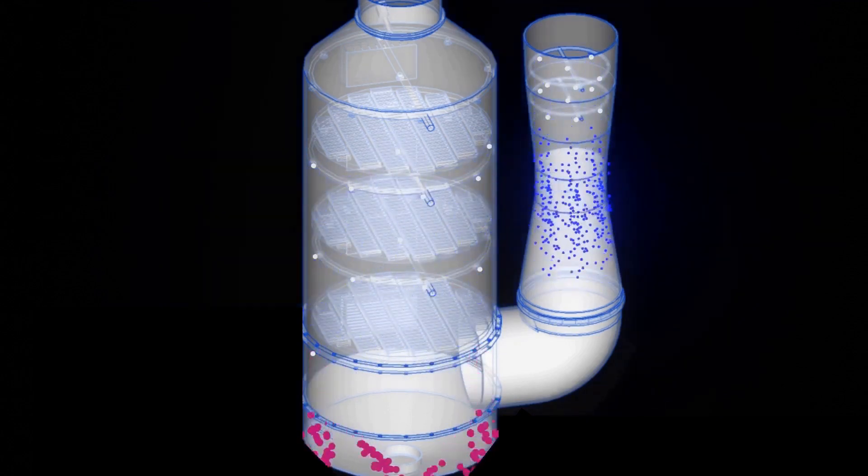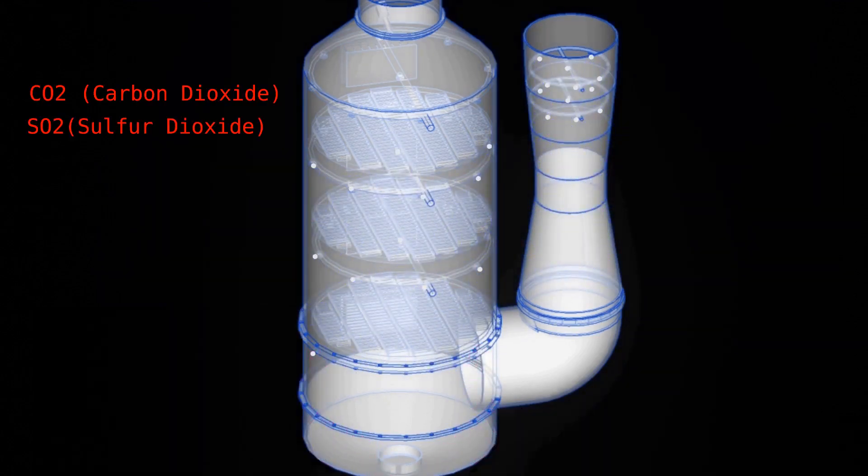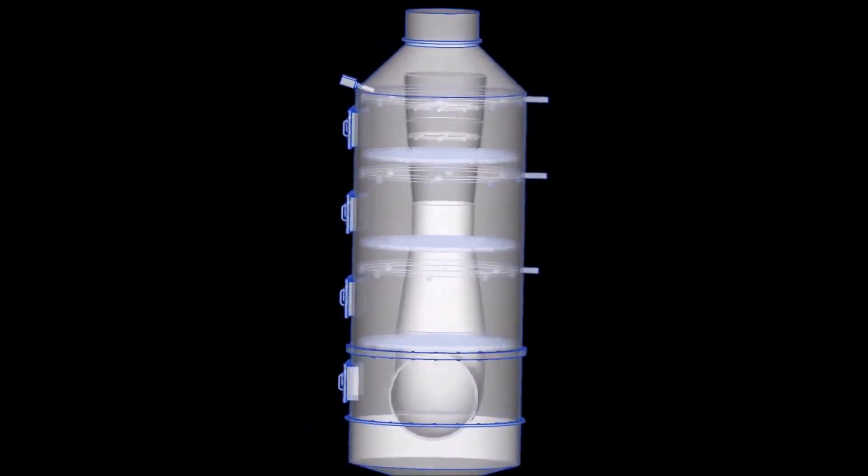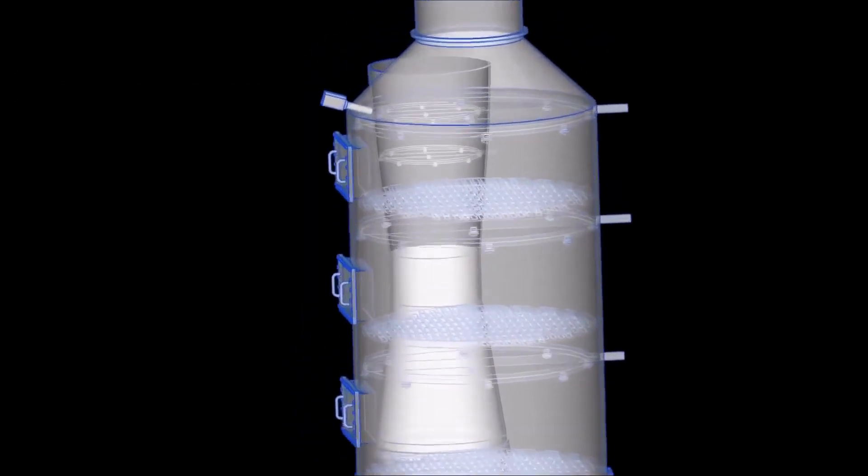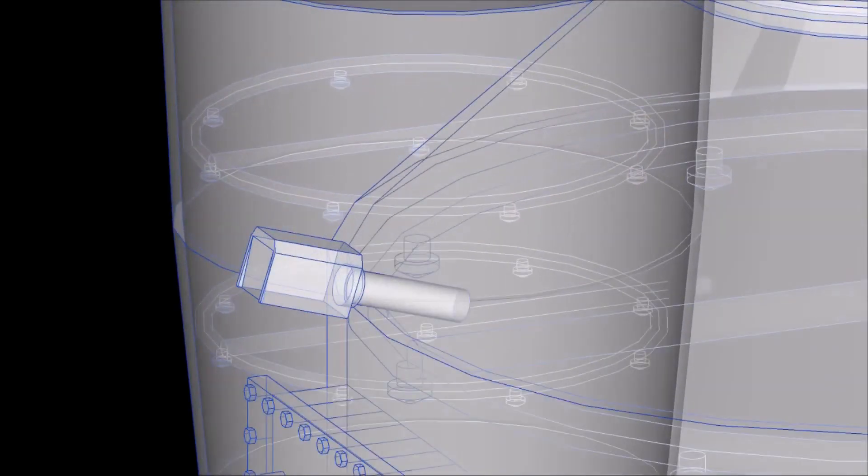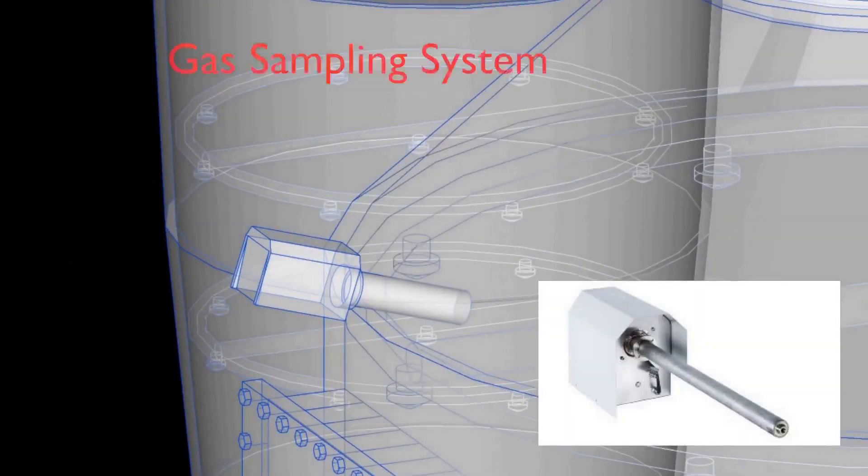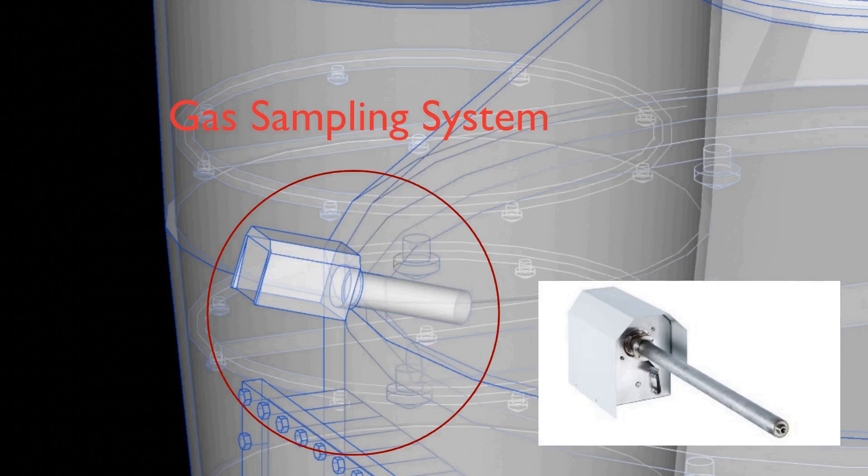Before the exhaust gas leaves the tower, the CO2 and SO2 will be measured by the gas sampling system. The data will be transferred simultaneously to the CEMS or the Continuous Emission Monitoring System to ensure that the system is in compliance with the regulation.